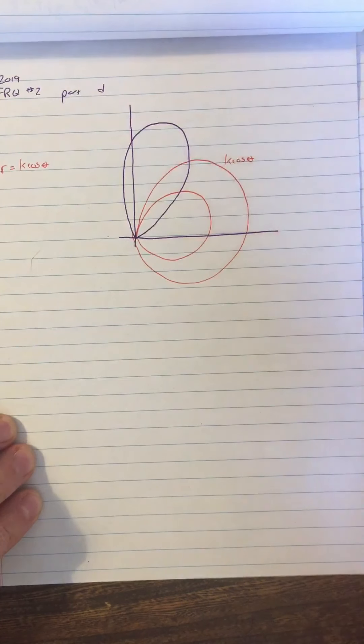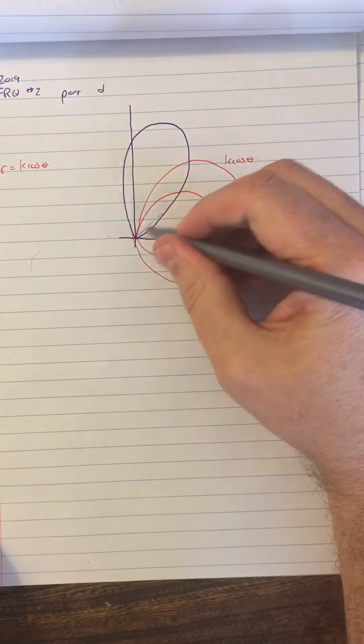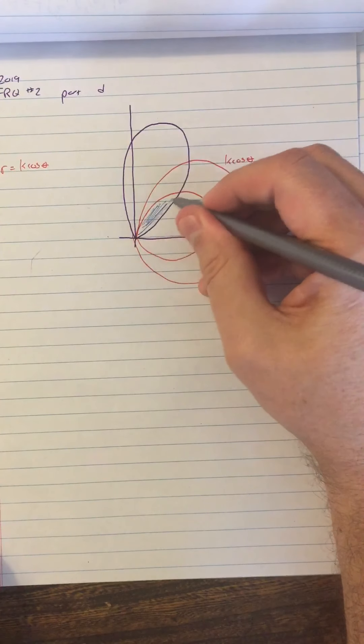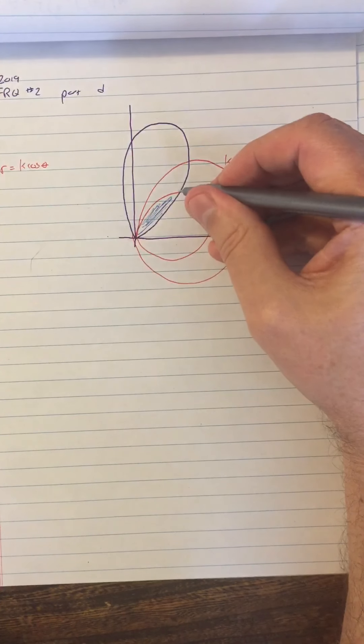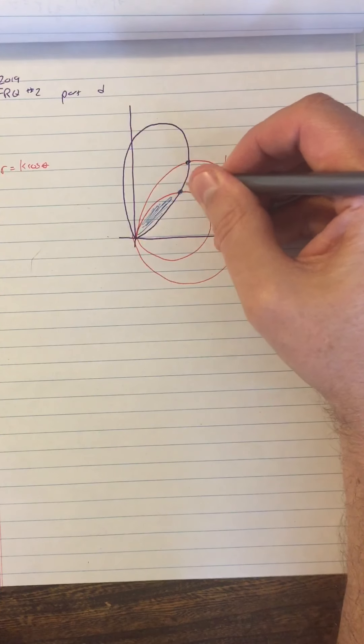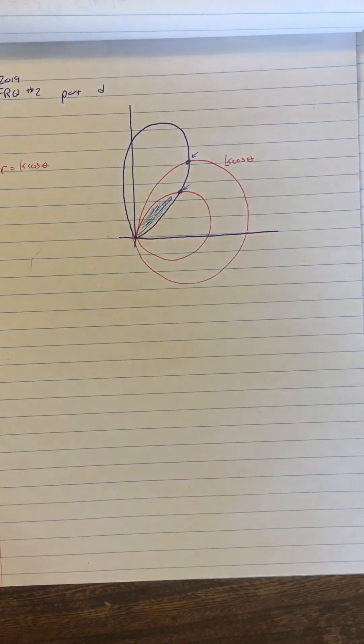Now I could do some work of finding what this area is between one of the circles and the given function. You could do that, it's really problematic, especially since you're going to have a different intersection point depending on what the value of k is. It becomes really, really difficult to do.